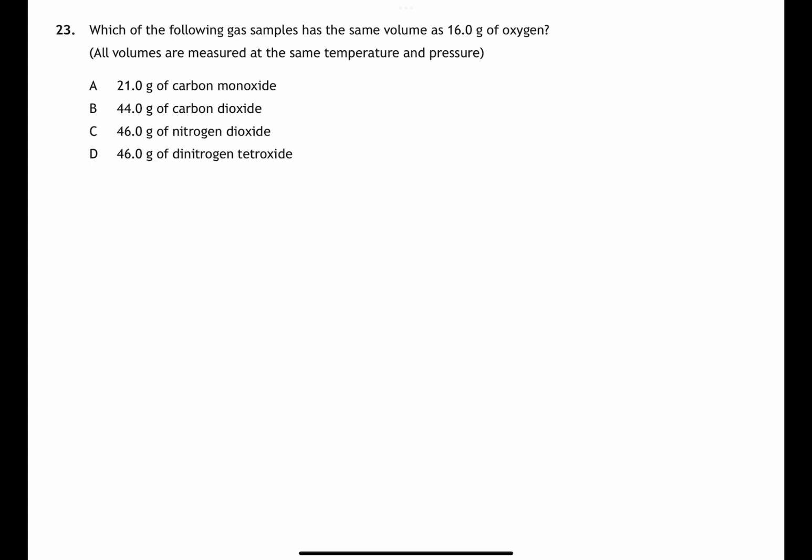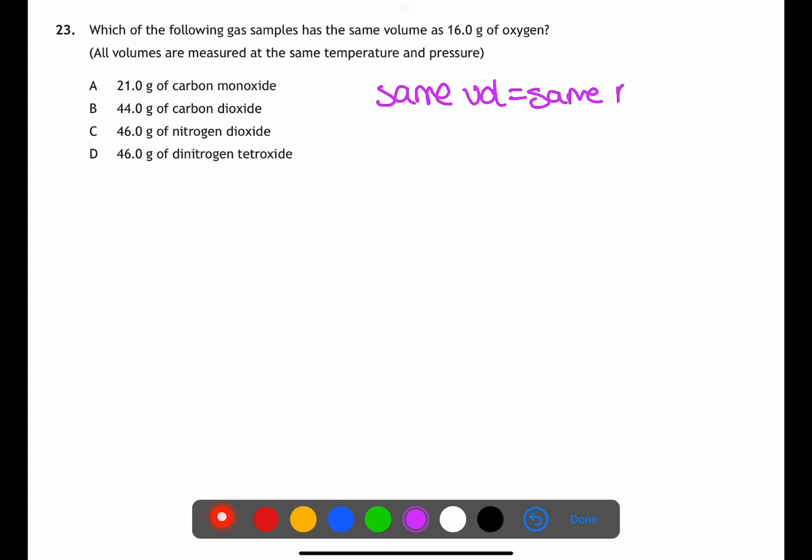Which of the following gas samples has the same volume as 16g of oxygen? To have the same volume there must be the same number of moles. Let's calculate the number of moles of 16g of oxygen. Each mole of oxygen weighs 32g. Therefore 16g is half a mole.